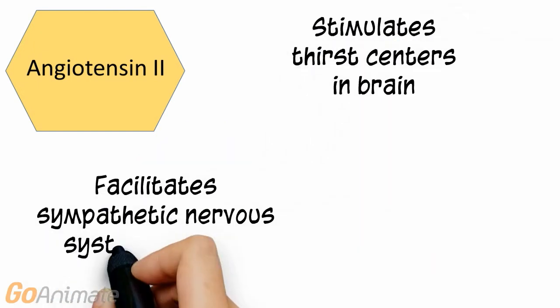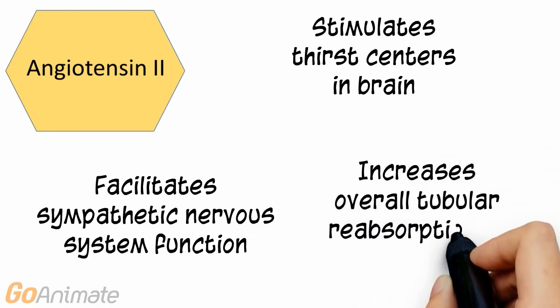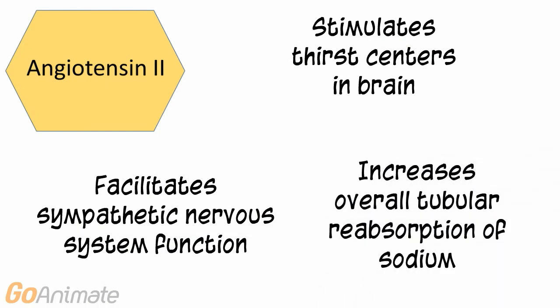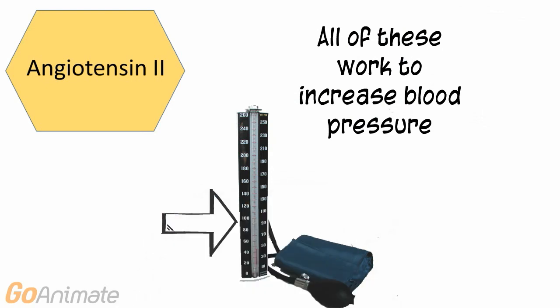Other effects of angiotensin 2 include stimulating thirst centers in the brain, facilitating sympathetic nervous system function, and increasing overall tubular reabsorption of sodium in the kidneys. All of these effects work to raise blood pressure.